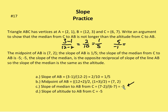I know the slope of the altitude is also going to be negative 5, because the slope of AB is one-fifth, and the slope of the line perpendicular to AB is the opposite reciprocal, which ends up being negative 5. So the slope of the median and the altitude are the same, and that tells us that both the median and the altitude are the same line.